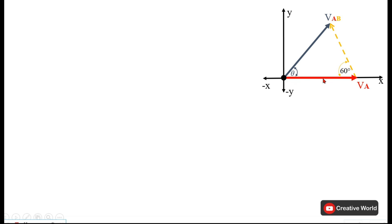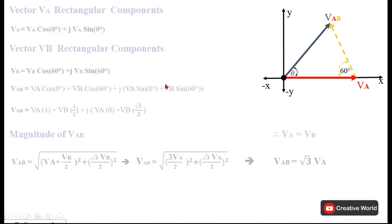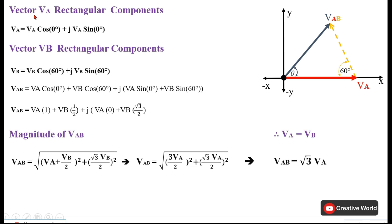Firstly, we will resolve the vector in red color and yellow vector. We will resolve these two vectors into their rectangular components. Then we will perform the addition and find out the components of VAB. Here, firstly, the rectangular components of VA is found.